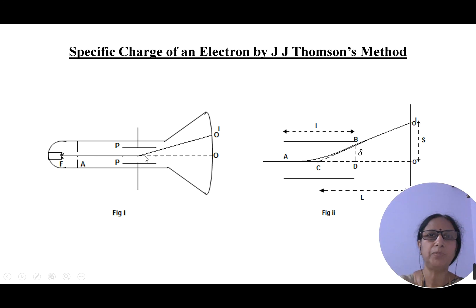After passing through the deflecting plates, the electron beam hits the fluorescent screen and the spot we obtain is the point O, which is exactly at the center of the screen.